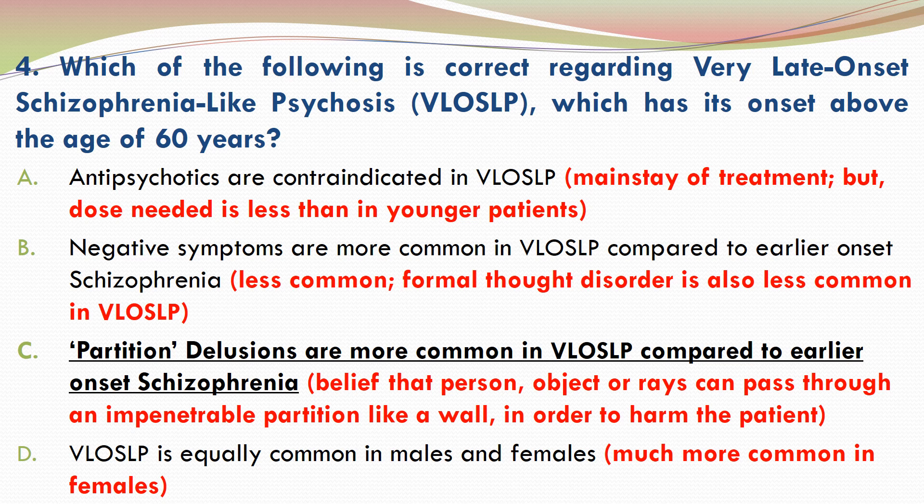A partition delusion is a belief that another person, object, or substance can pass through an impenetrable partition like a wall in order to cause harm to the patient. While partition delusions can occur at any age, they seem to be more common in the elderly.